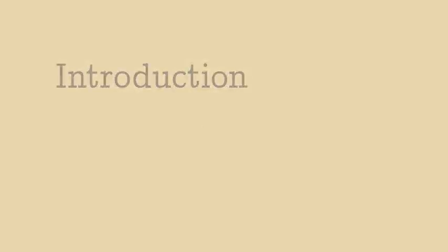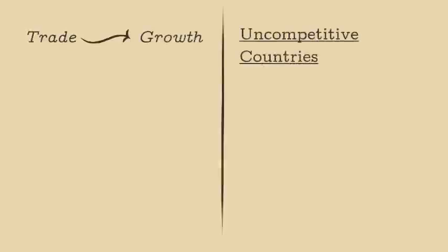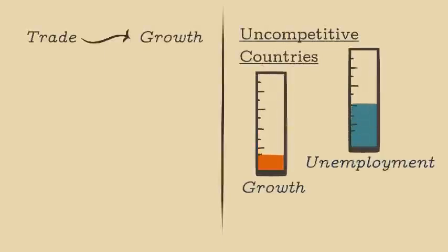This video is an introduction to a post-Keynesian theory linking trade and growth, known as Thirlwall's Law, which claims that uncompetitive countries may be constrained to low growth rates and high unemployment, which cannot be easily addressed by the neoclassical solution of reducing export prices on international markets. This video will go over the basics of the theory.